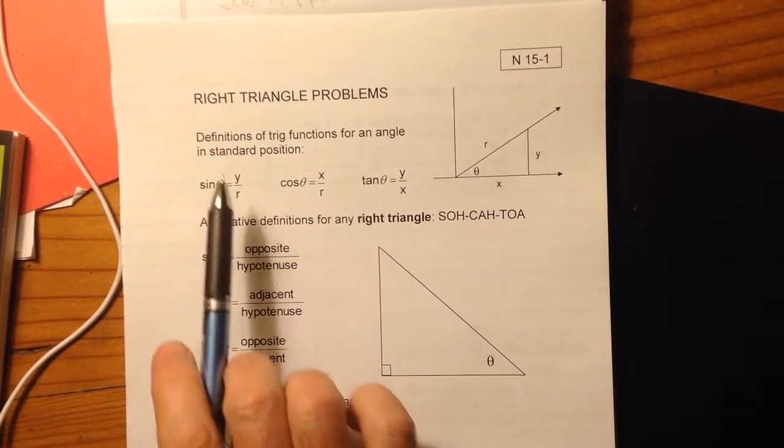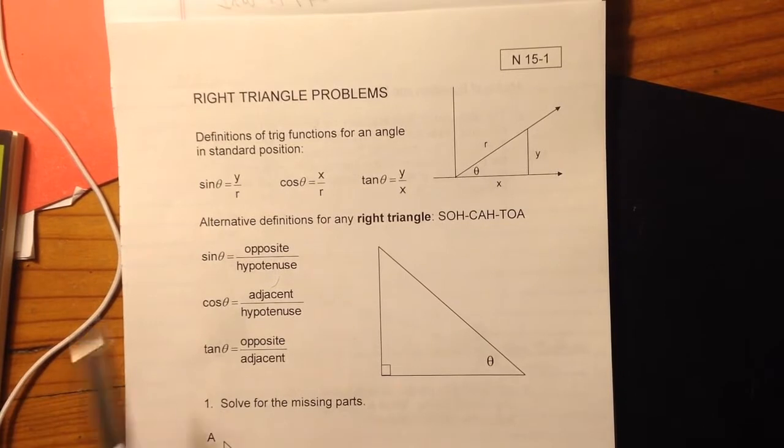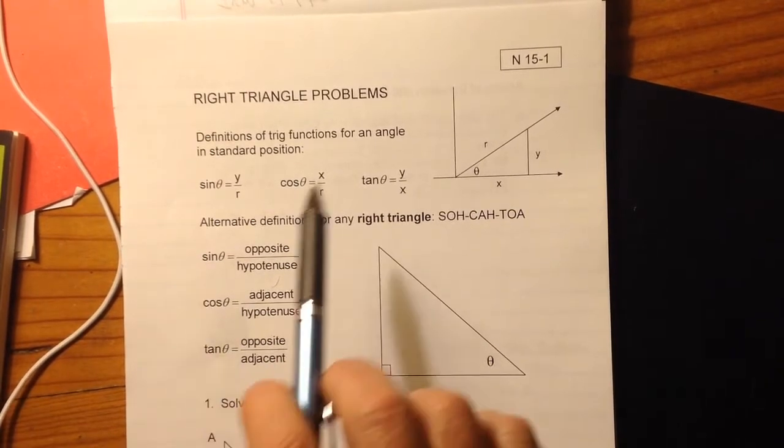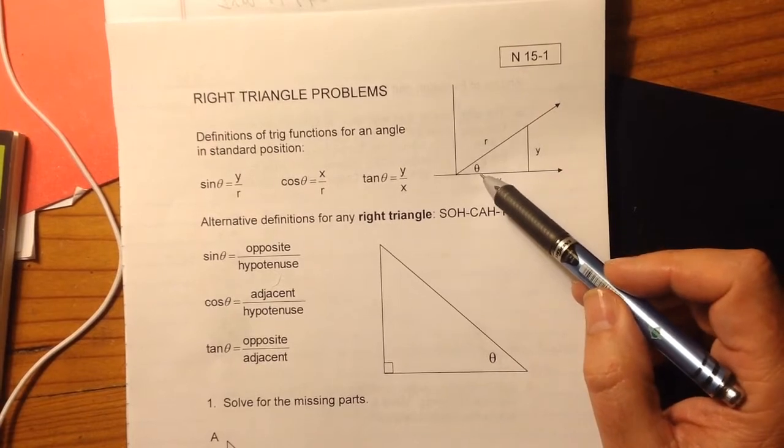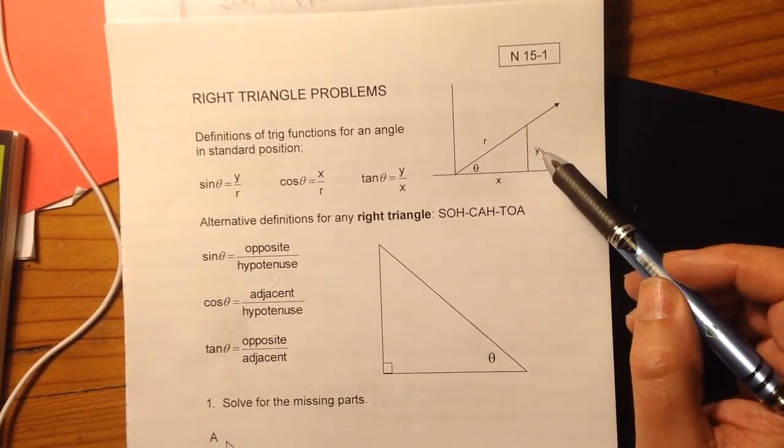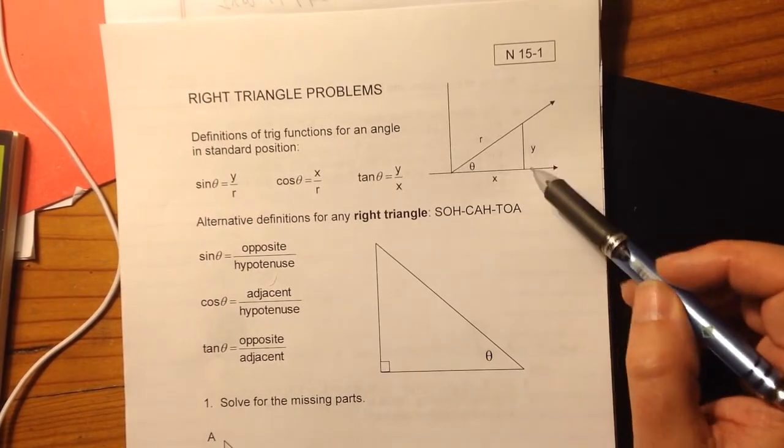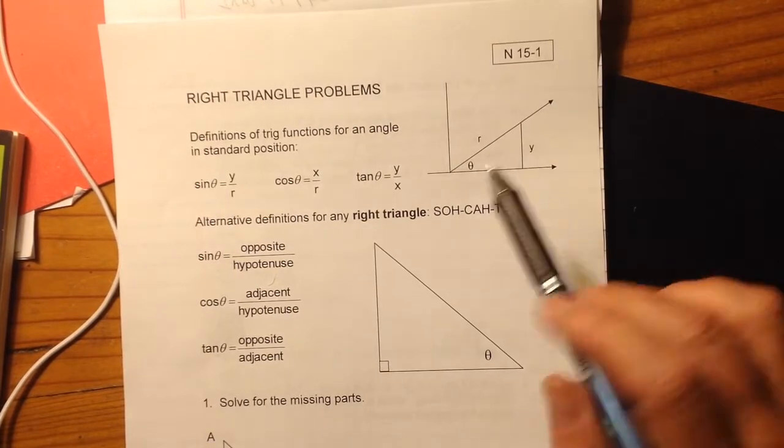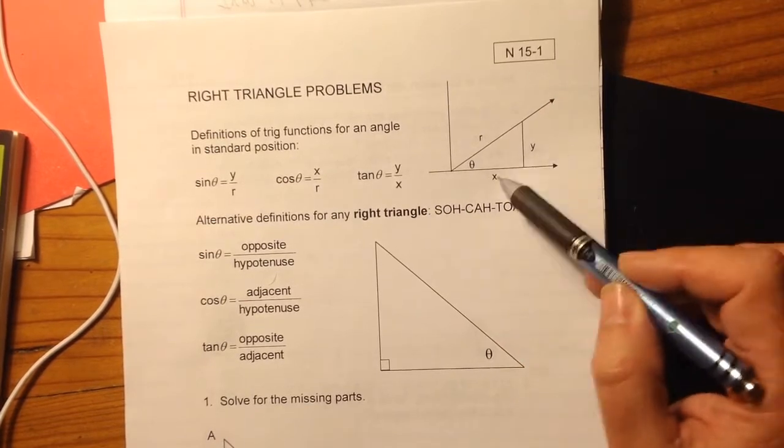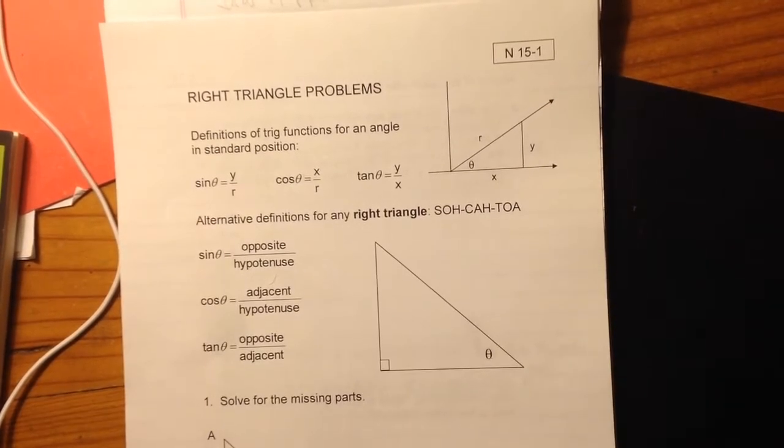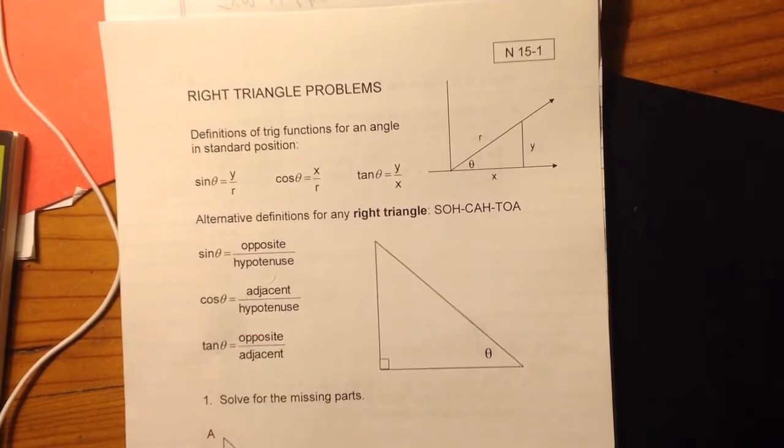We started way back when defining our trig functions sine, cosine, tangent, those three basic trig functions for an angle in standard position. So if I have theta in standard position, sine, remember, is y over r, cosine was x over r, and then tangent was y over x.